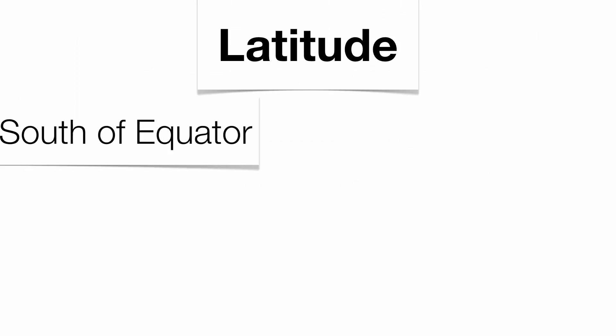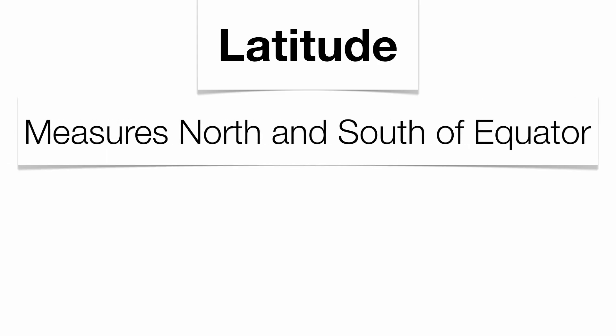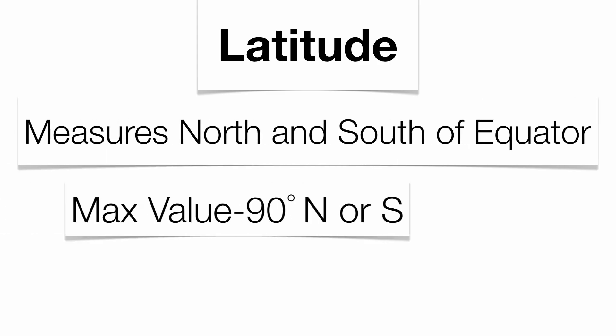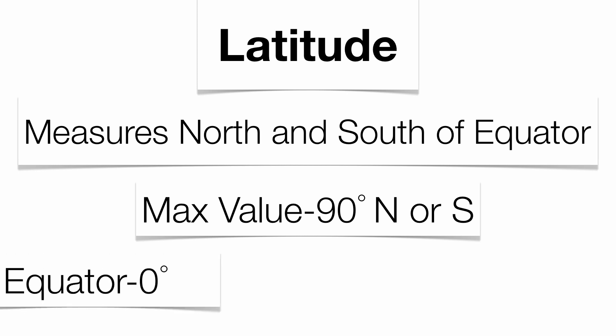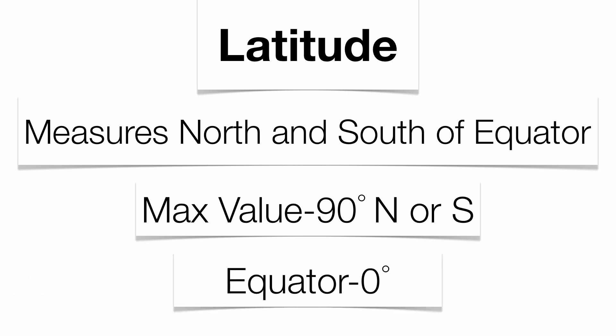Your latitude lines are going to measure north and south of the equator with a maximum value of 90 north and a maximum value of 90 south. The equator, which has a value of zero, will separate the northern and southern hemispheres. Latitude lines never intersect — they're never going to connect with or touch each other.